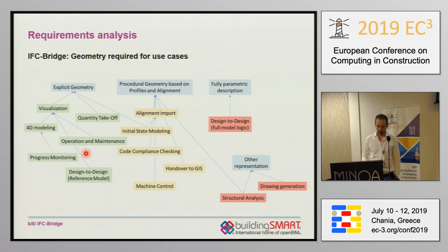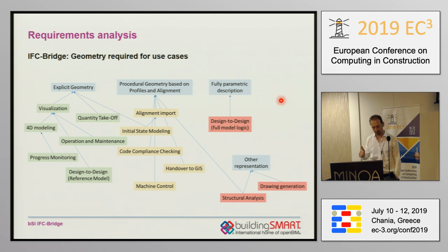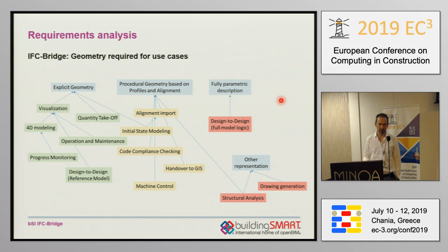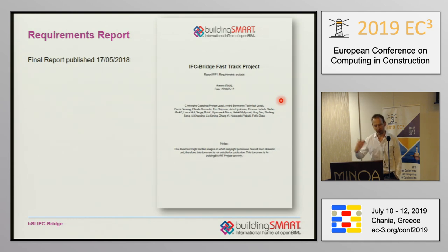On this basis, we analyzed the geometry available. We grouped use cases with respect to what kind of geometry description they require, distinguishing explicit geometry, procedural geometry based on profiles and alignment, and full parametric description — which is not yet available. By doing this analysis, we could show that the available geometry descriptions are sufficient to describe the most important bridge use cases. These requirements were published in a requirements report in May 2018.